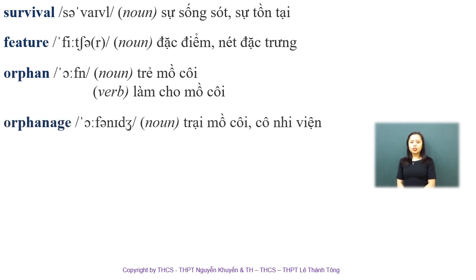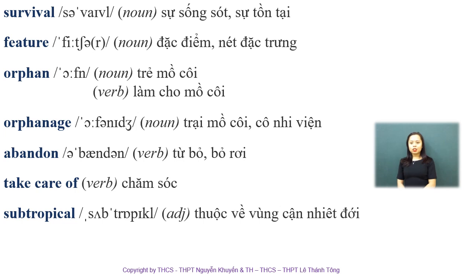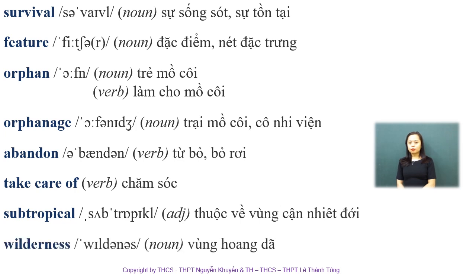'Orphanage' is a noun, stress on the first syllable. 'Abandoned' is a verb meaning từ bỏ, bỏ rơi, stress on the second syllable. As an adjective, add -ed: 'abandoned.' 'Take care of' is a phrasal verb meaning look after. 'Subtropical' is an adjective, stress on the second syllable. 'Wilderness' — remember, you can say wildlife or wild, but vùng hoang dã means wilderness. Stress is on the first syllable.